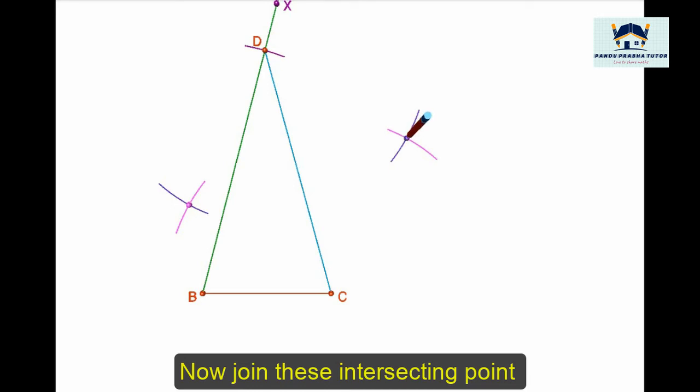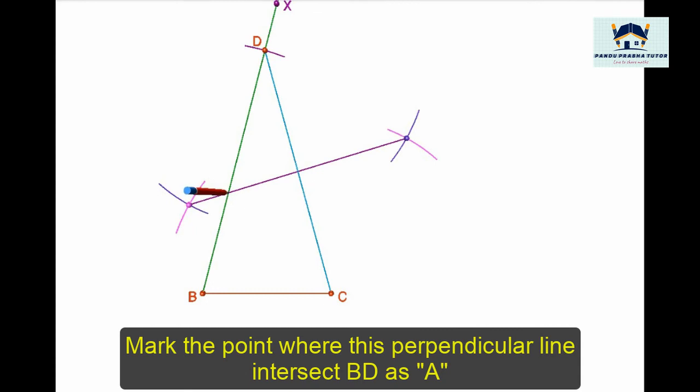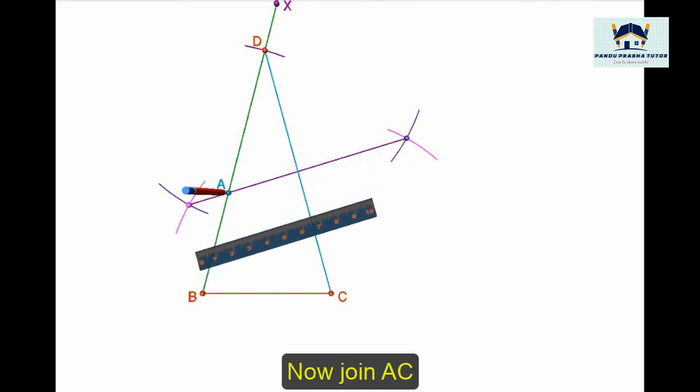Join these two intersecting points. This is the perpendicular bisector of DC. Now mark the point where this perpendicular bisector intersects BD. Join AC.